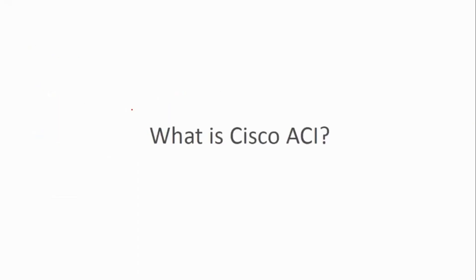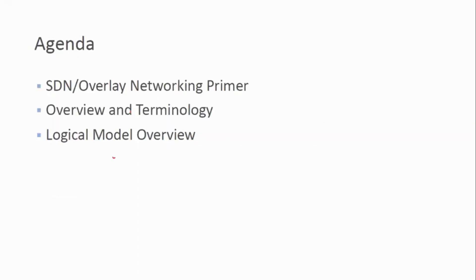Today we are going to cover what is Cisco ACI, what is its architecture, what's its logical model, and all the hardware used to configure and implement ACI in our data center. First we will talk about what is SDN overlay networking, then an overview and terminology of ACI, and then the logical model.